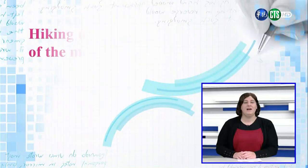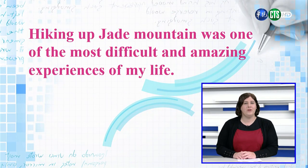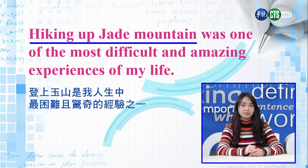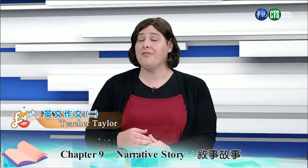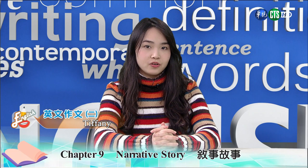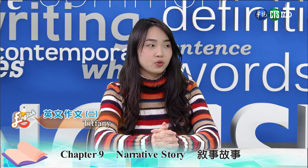For example, hiking up Jade Mountain was one of the most difficult and amazing experiences of my life. What is the topic of this? Tiffany? 举例而言,登上玉山是我人生中最困难而且最惊奇的经验之一。那这句话里面请问一下,Tiffany同学我们的主题是什么呢? 主题应该是hiking up Jade Mountain。那主题就是徒步登上玉山。Correct. And how does the author feel about this experience? 那作者对这个有什么感觉呢? It was amazing but difficult. 作者觉得这个很棒,但是很困难。